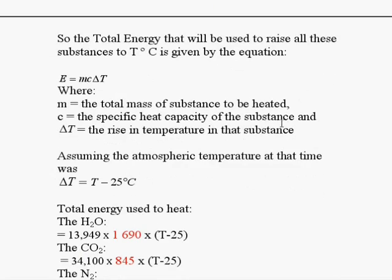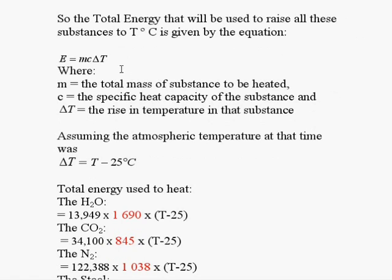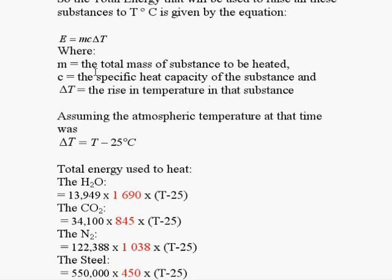The total energy that will be used to raise all these substances to T degrees Celsius is given by the equation E equals MC delta T, where M is the total mass of the substance to be heated, and C is the specific heat capacity of the substance, and delta T is the rise in the temperature in that substance.